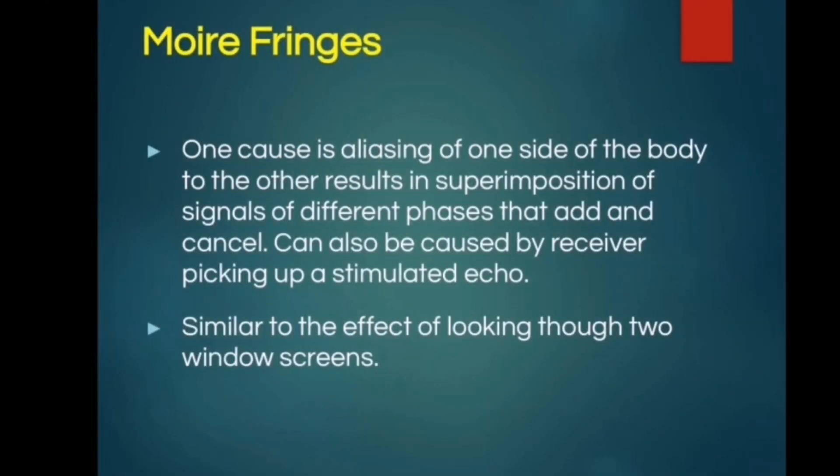One cause of moiré fringes is aliasing of one side of the body to the other, resulting in the superimposition of signals of different phases that add and cancel. It can also be caused by a receiver picking up a simulated echo, similar to the effect of looking through a two-window screen.